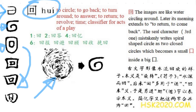回报, 回避, 回顾, 回收. 回收 means collect — 回 meaning back — so to collect back, meaning to recycle. So this is 回.